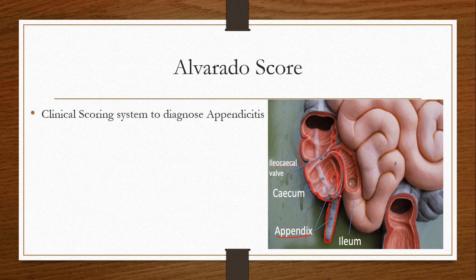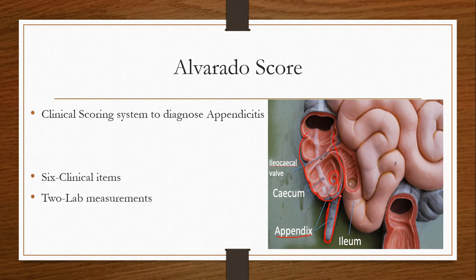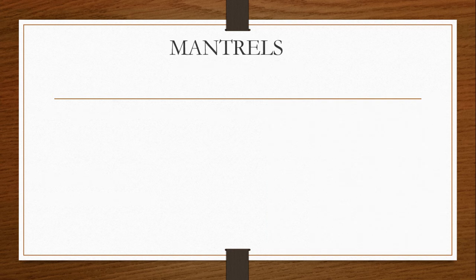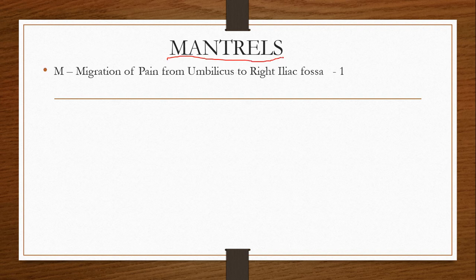The inflammation of the appendix is called appendicitis, and to diagnose it we can use the Alvarado score. The Alvarado score consists of six clinical items and two lab measurements. You can remember the Alvarado score through the mnemonic MANTRELS.